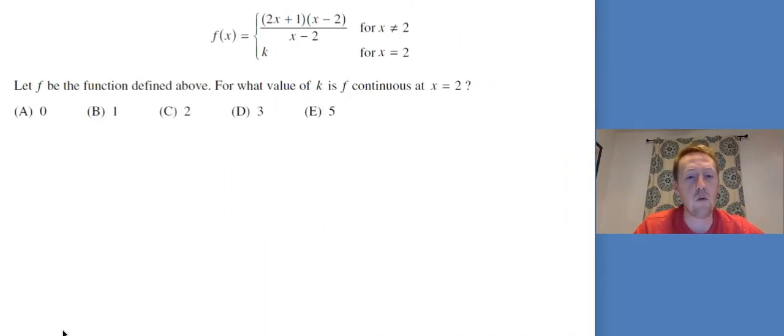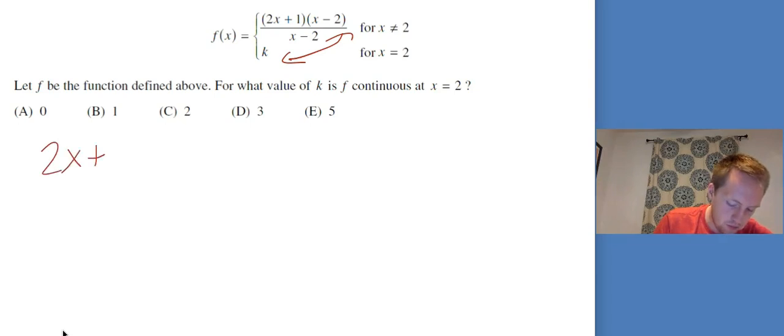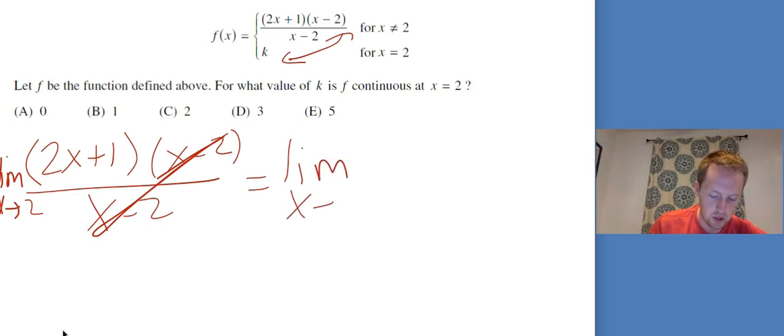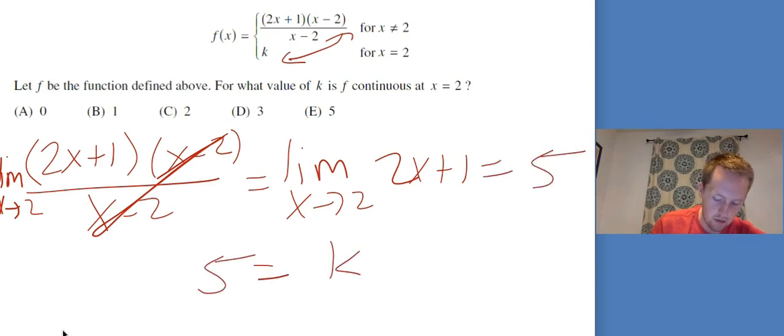For what value of k is f continuous at x equals 2? For this piecewise function, we need these two pieces to be the same when x equals 2. I need to take the limit as x goes to 2 for this: 2x plus 1 times x minus 2 over x minus 2. I've got a factor of x minus 2 on top and bottom that cancels out. This becomes the limit as x goes to 2 of just 2x plus 1. That's 5. So I need 5 to be equal to k.